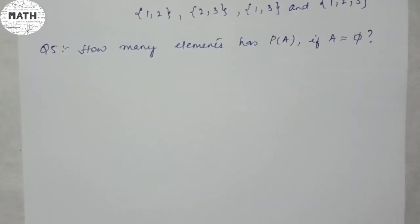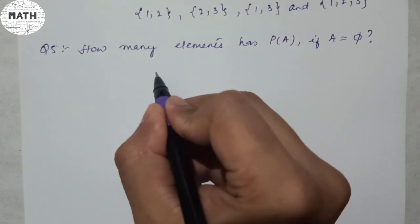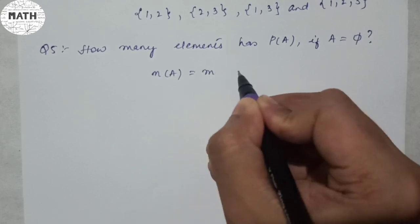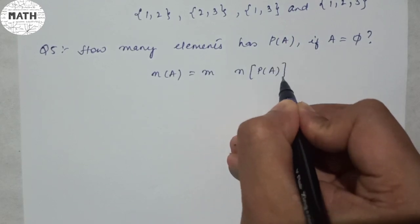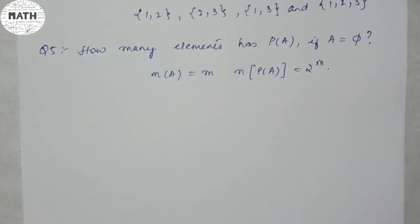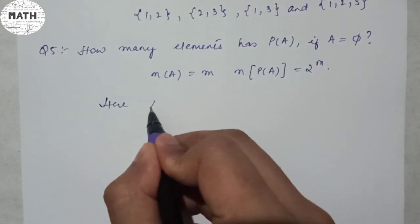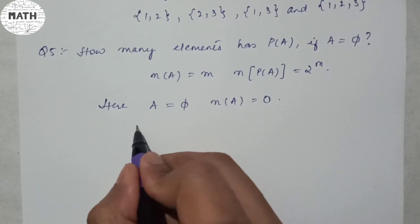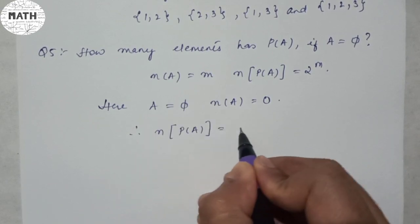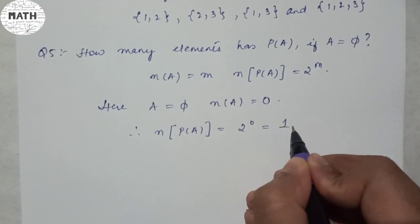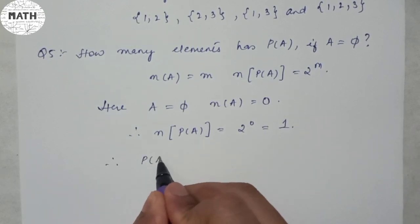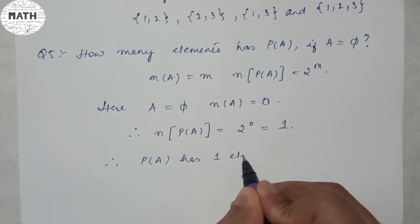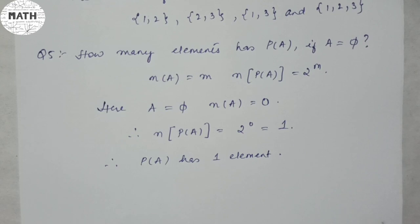Question number 5: how many elements has P(A), the power set of A, if A is equal to phi — the empty set? There are no elements, so N(A) equals 0. Therefore the number of elements of P(A) would be 2 to the power 0, which equals 1. So P(A) has 1 element.